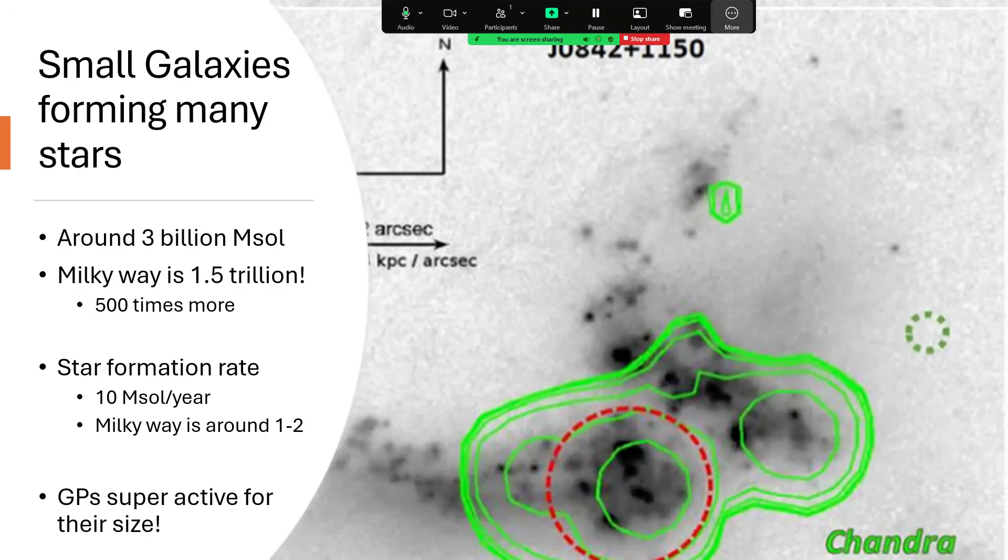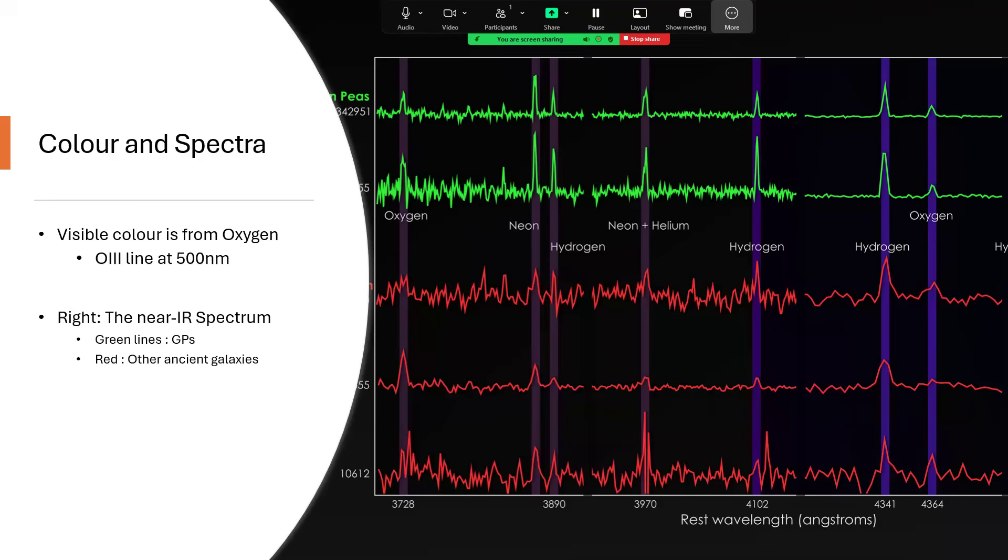The picture on the right is a Chandra X-ray image overlaid on a visible image, showing a lot of that X-ray emission and a lot of the dotty nature of some of these GPs when you zoom in to really high resolution.